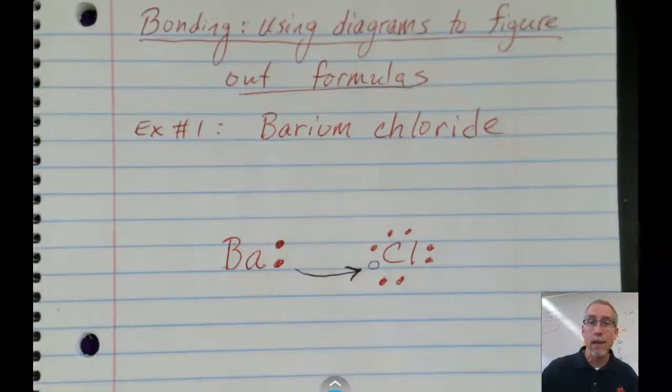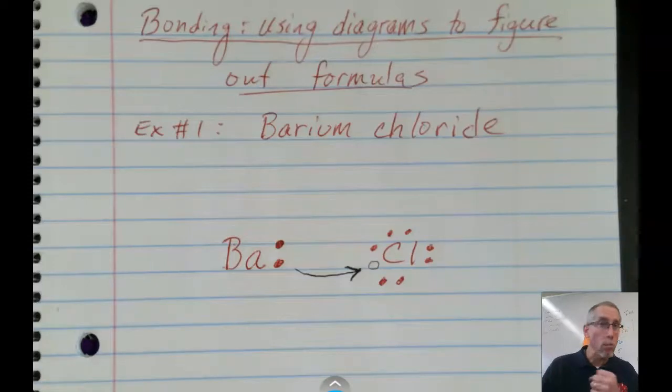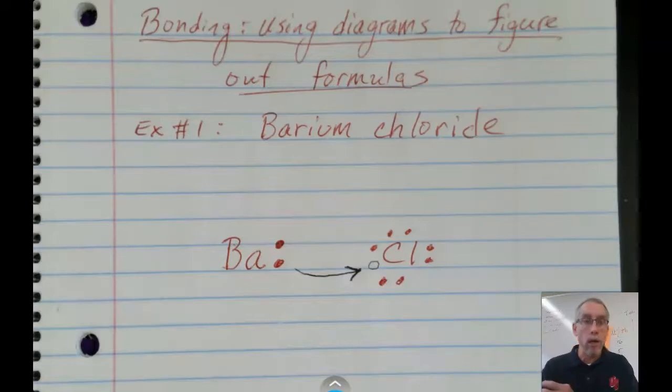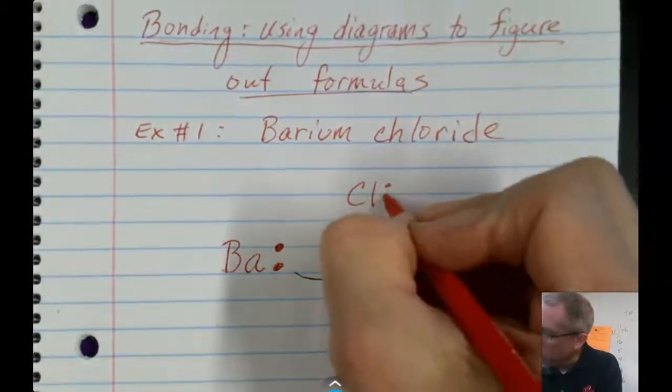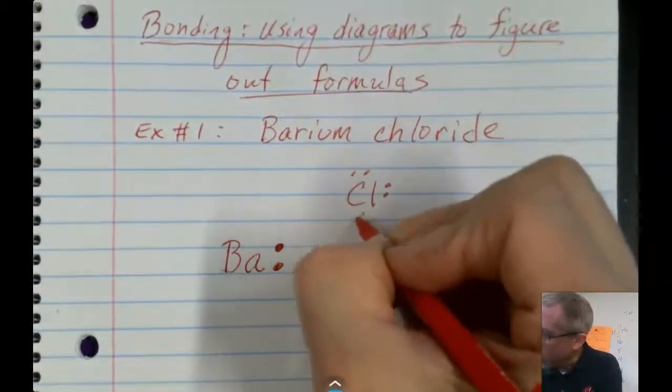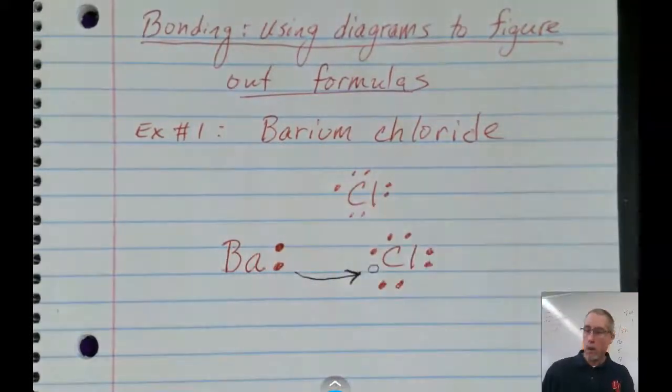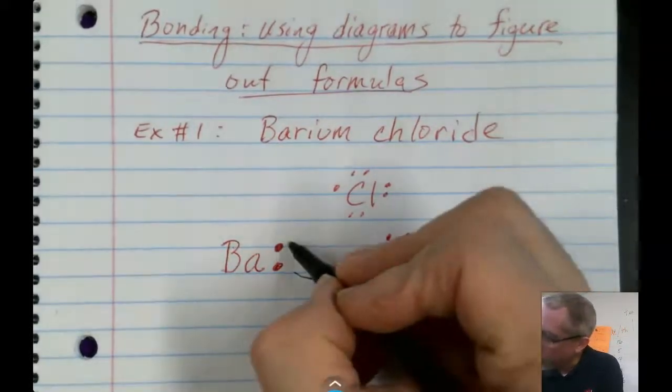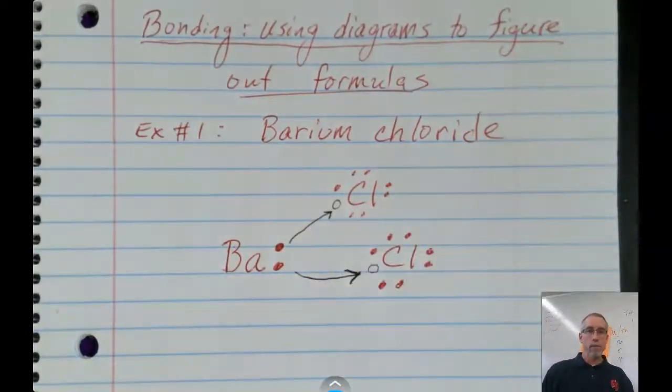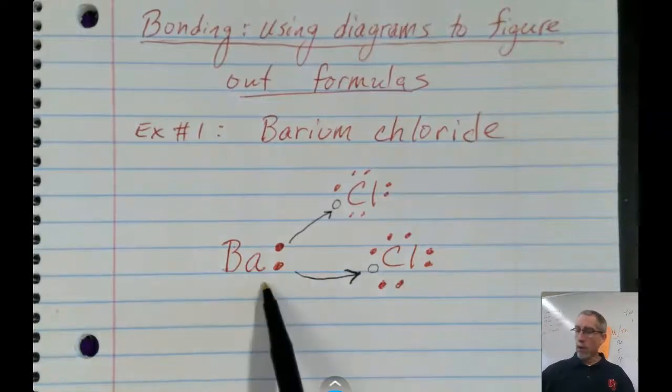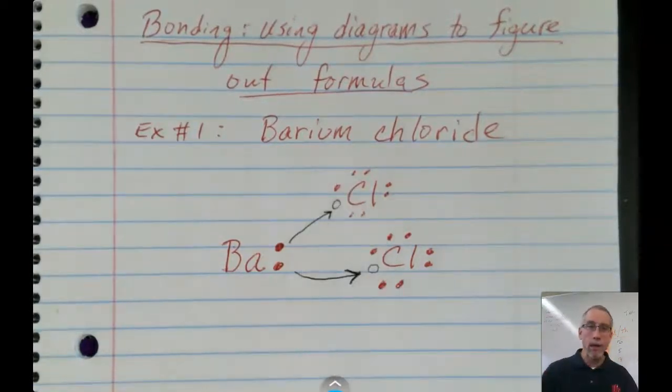However, barium is not happy yet. It still has another electron it hasn't been able to get rid of. So this is why we bring in another atom of the nonmetal. So you just keep adding additional metals or nonmetals, whatever you need, in order to have all the electrons given away and all the electrons accepted and have them be the same number. So we can draw it up here. Again, this is identical to the other one. So it's got seven outer electrons to begin with. But now we see a place for this other electron to transfer to that little spot there. So we've gotten rid of those two, and these each have acquired one, everybody's happy.